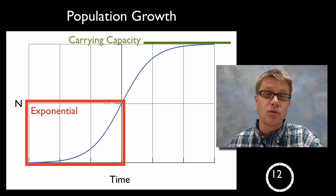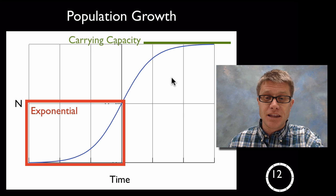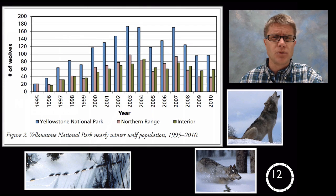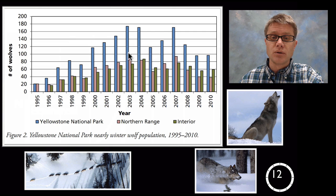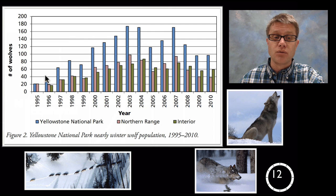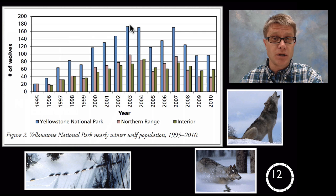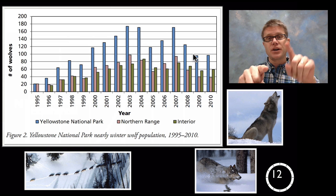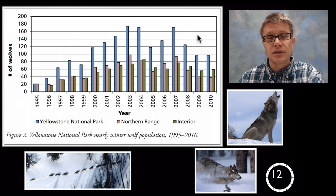Over time you'll deplete those biotic and abiotic factors and hit what's called a carrying capacity — the maximum number of organisms an area can support. The wolves reintroduced into Yellowstone Park in the early 90s are a real example: their numbers went through exponential growth, then they depleted their resources — eating too many elk, bison, and deer — and the population dropped down. We get this oscillation as predators drop off and prey recovers, eventually settling around a carrying capacity.